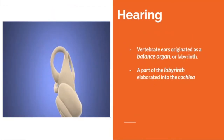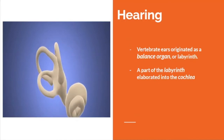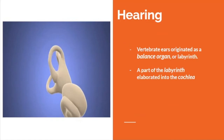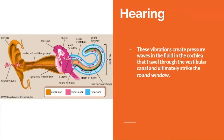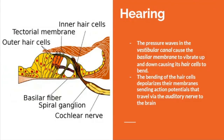Vertebrate ears originated as a balance organ, or labyrinth, and a part of the labyrinth elaborated into the cochlea. Vibrating objects create pressure waves in the air that cause the tympanic membrane to vibrate. The three bones of the middle ear transmit the vibration to the oval window on the inner ear, or cochlea. These vibrations create pressure waves in the fluid of the cochlea that travel through the vestibular canal and ultimately strike the round window. The pressure waves cause the basilar membrane to vibrate, causing its hair cells to bend. The bending of the hair cells depolarizes their membrane, sending action potentials via the auditory nerve to the brain.